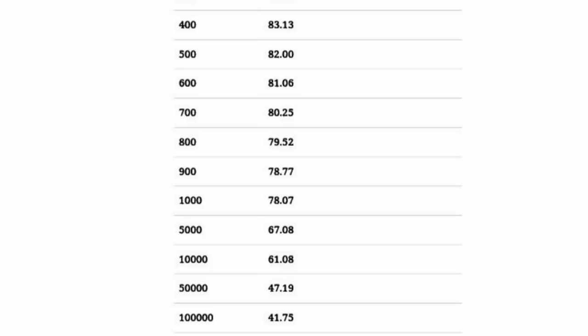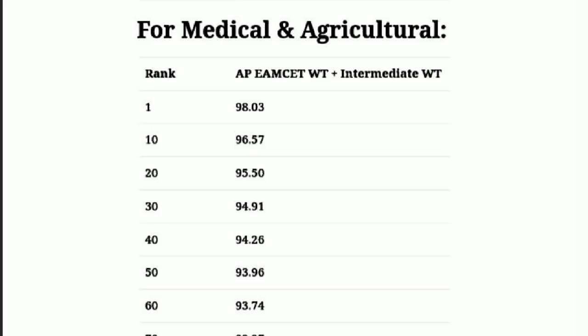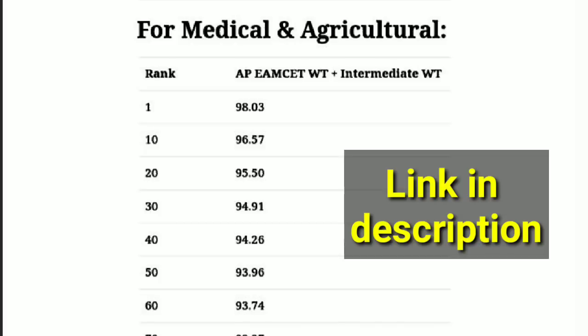For Bi-PC students, there will be huge competition because of theory subjects. For securing first rank, you must get 98 weightage — AP MSET weightage plus IP weightage. For securing a rank below 50, you must get the weightage around 93.96. I have provided the link to these pictures in the description of this video, you can download them from there.